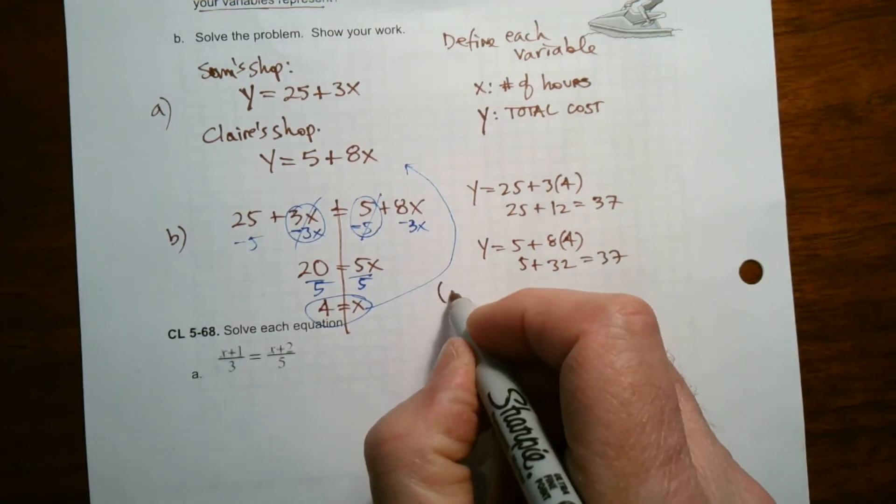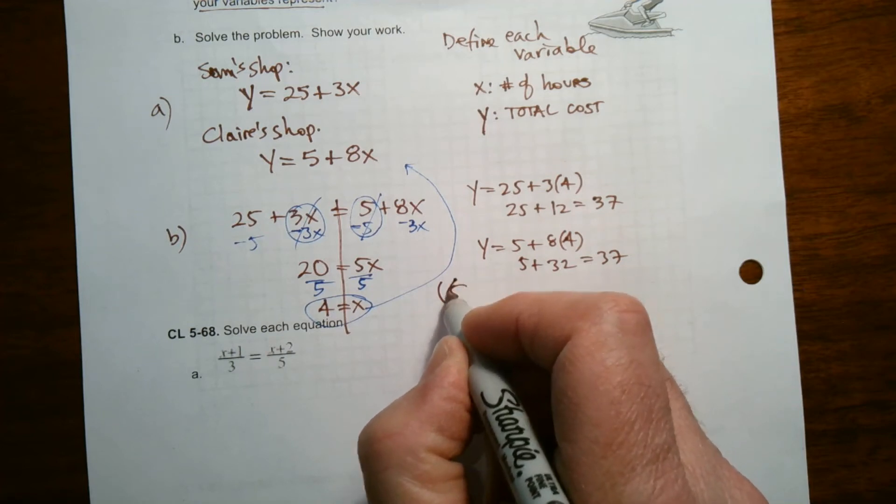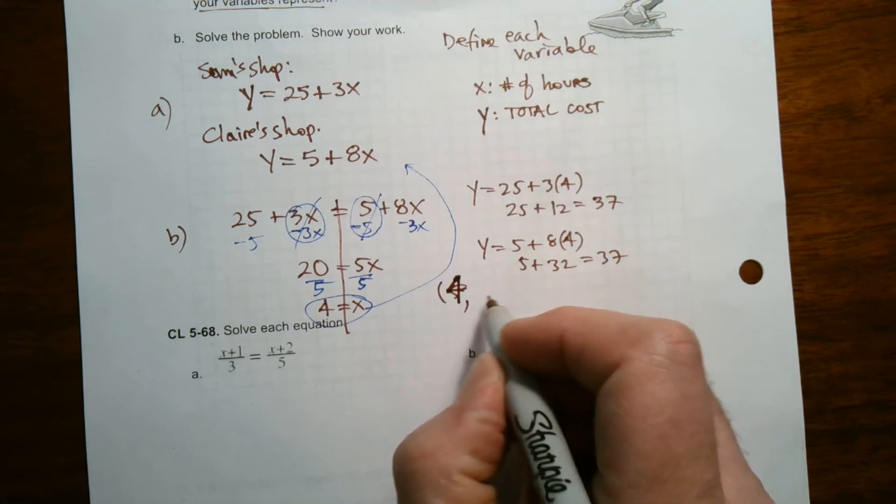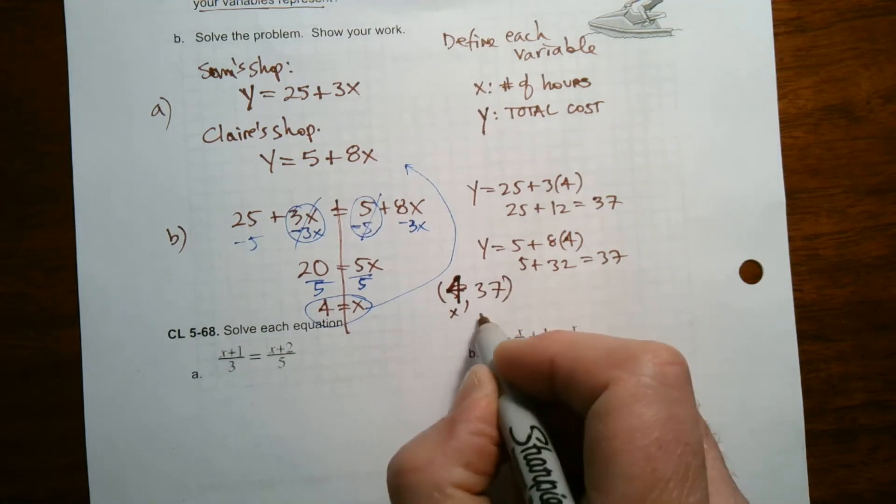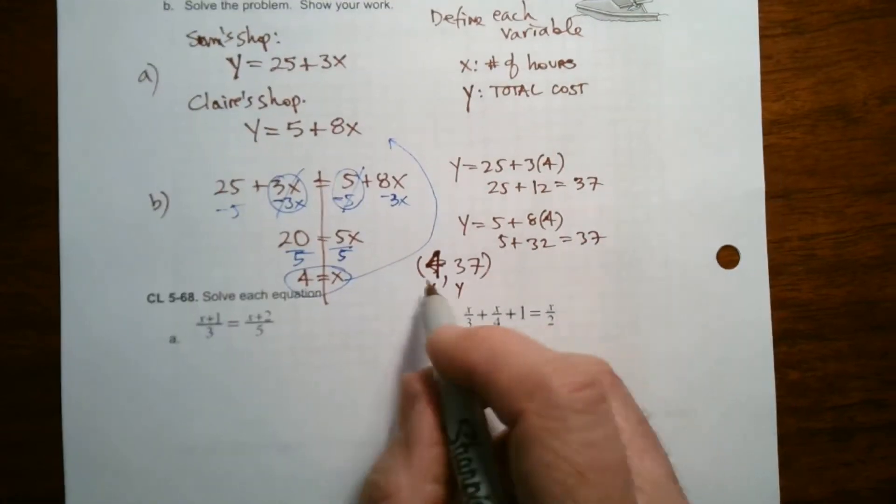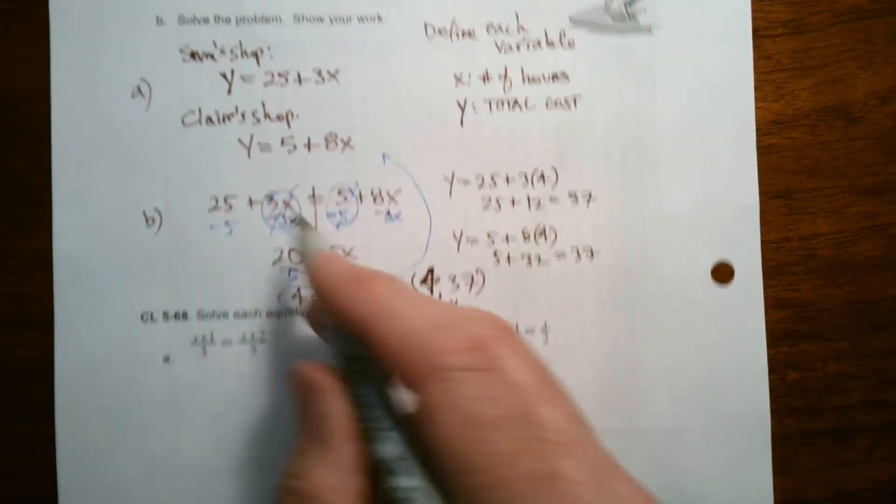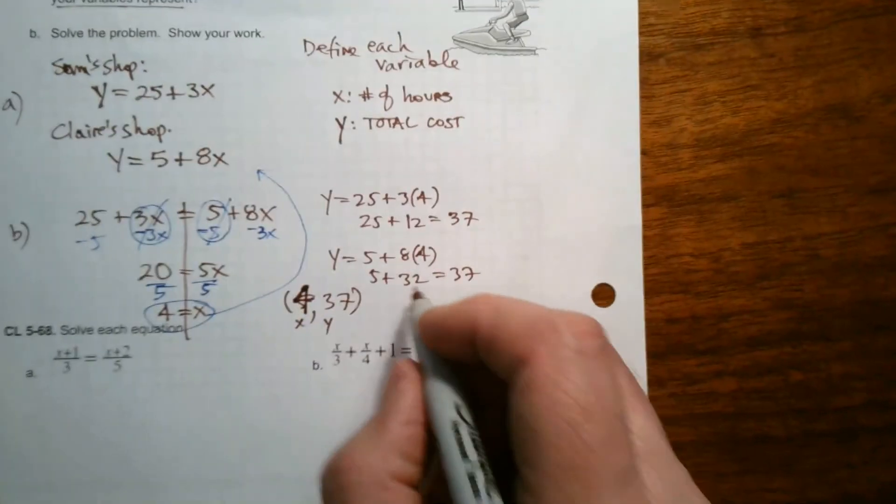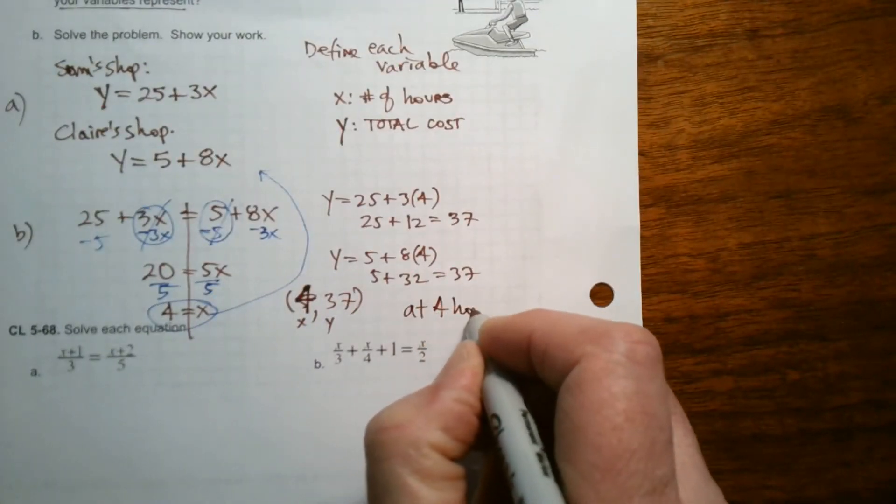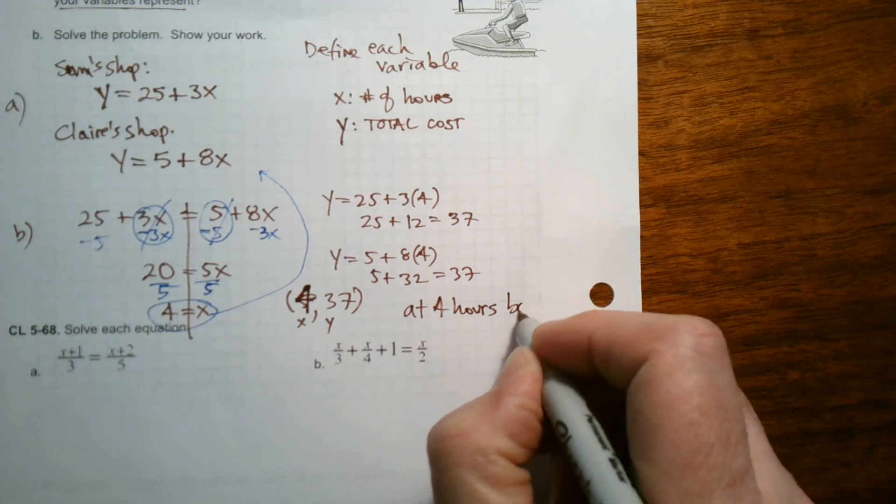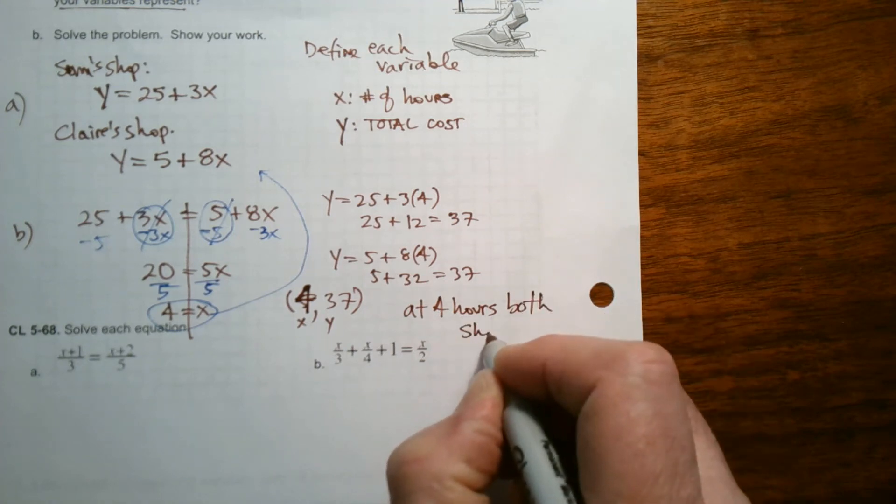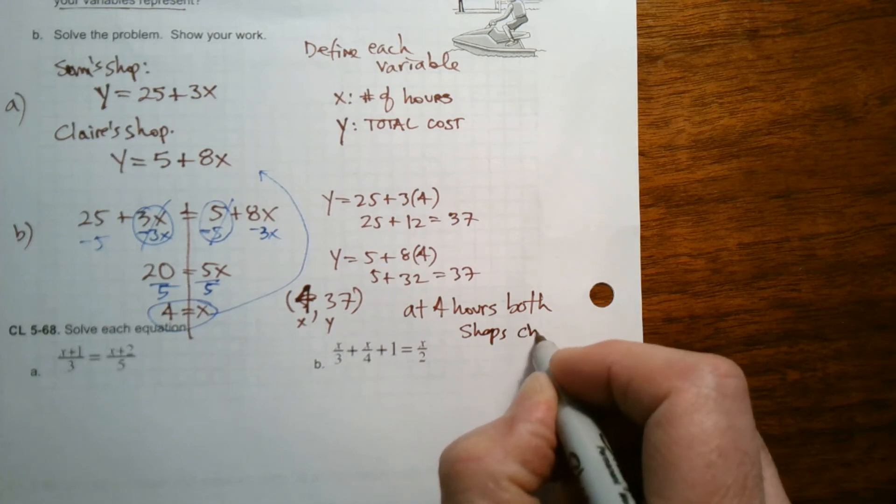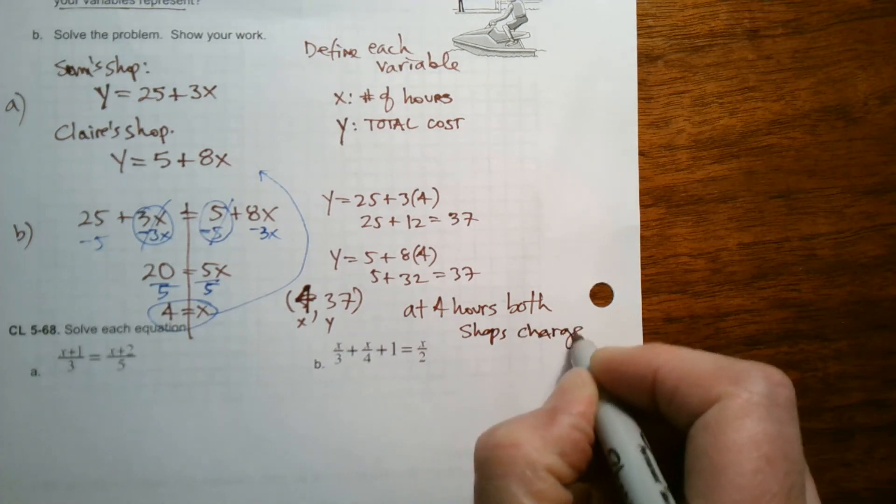So my solution, if I were to looking at this on a graph, because remember your graph, your intersection point is your solution is four comma 37. So when X equals four, Y equals 37. So that's the solution. But what does this mean according to the word problem? What it means, and this is my answer here, is at four hours, both shops charge the same.